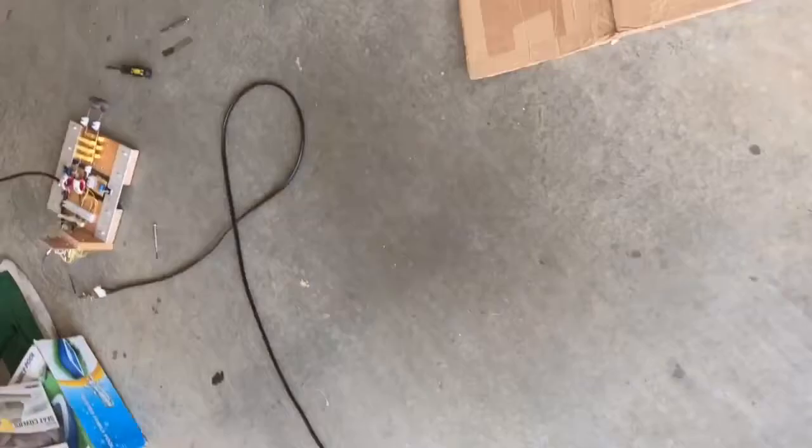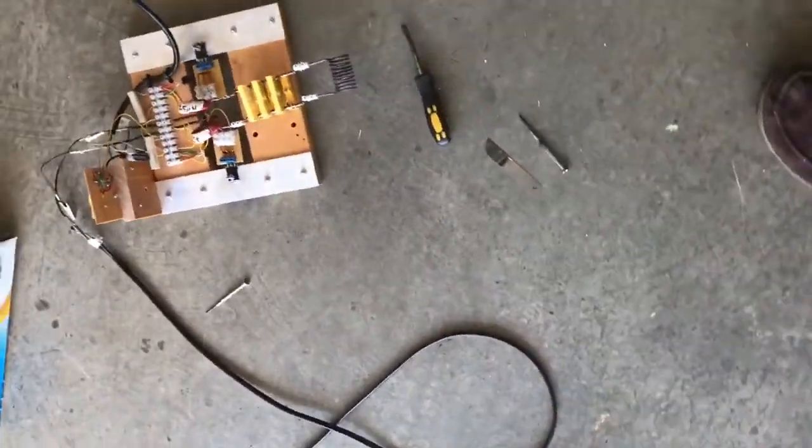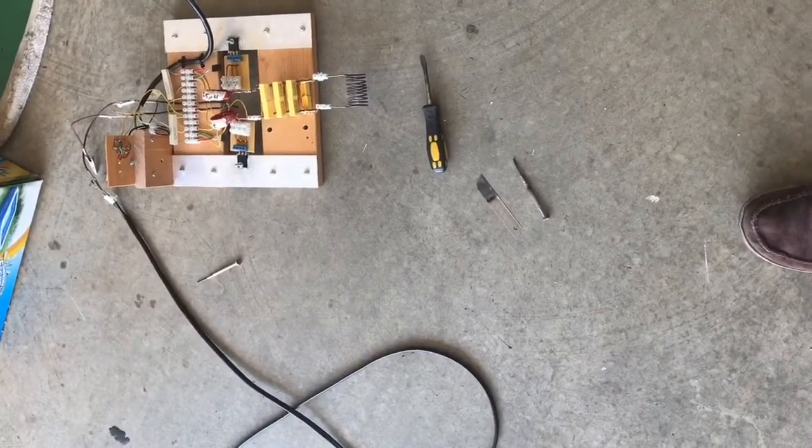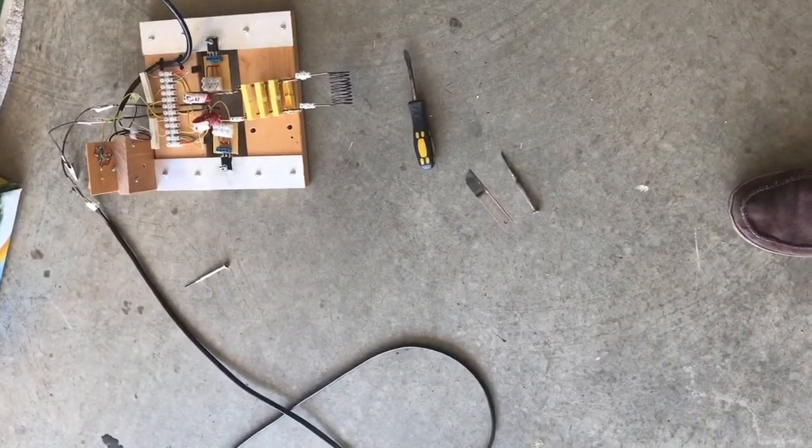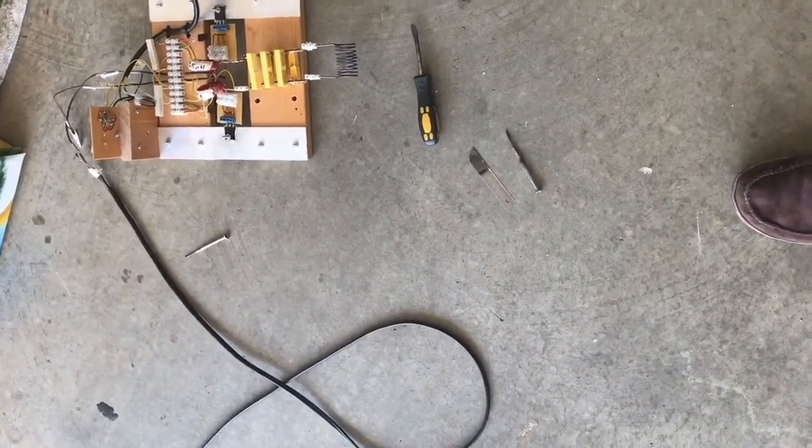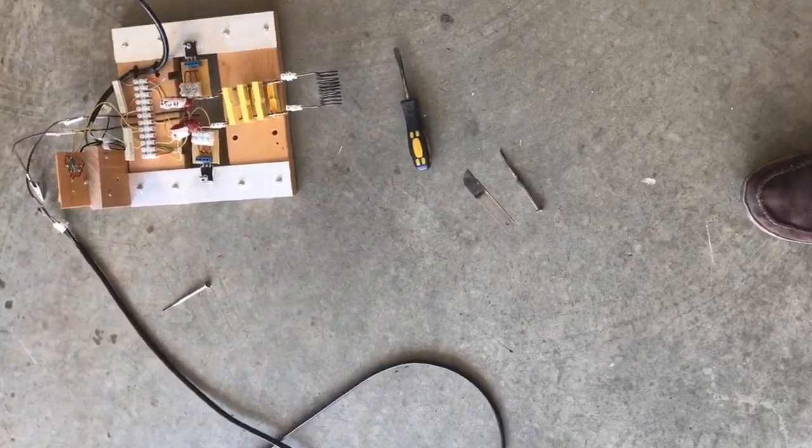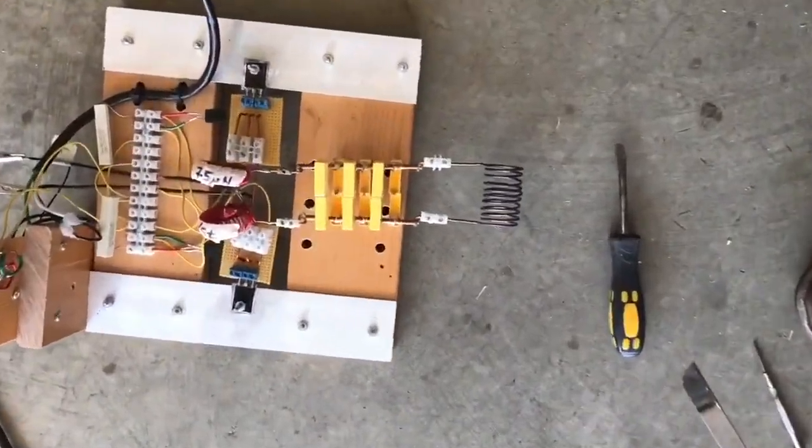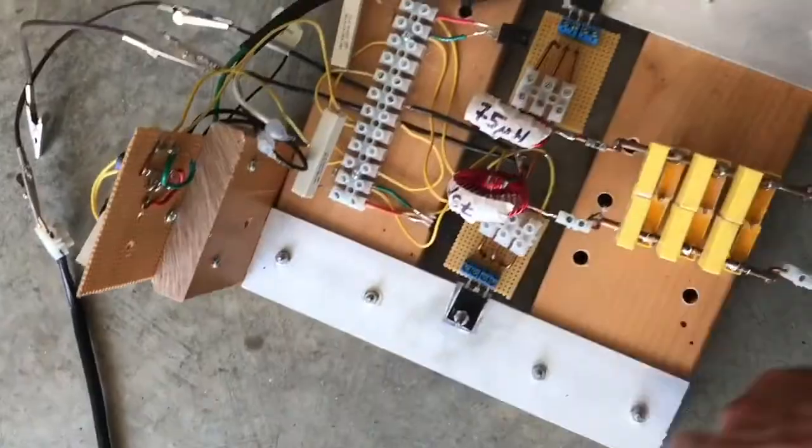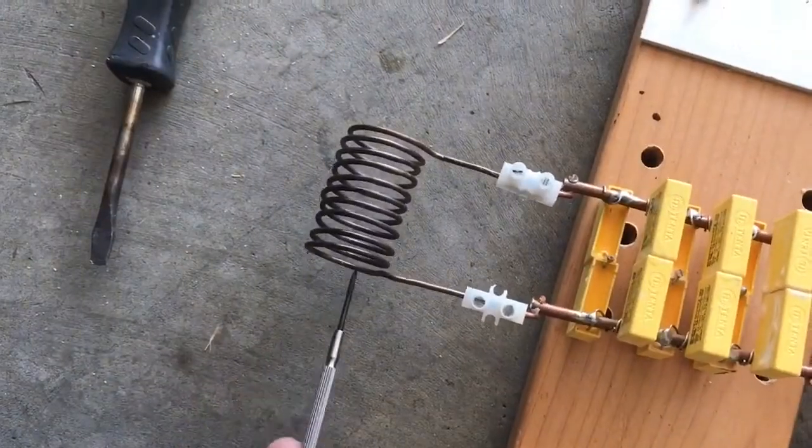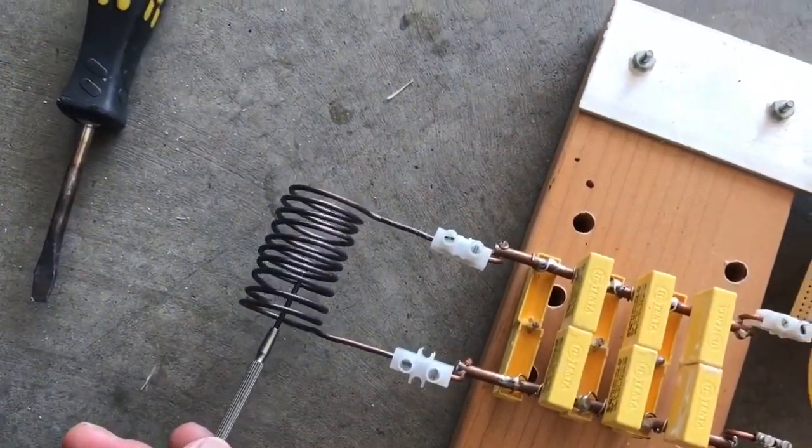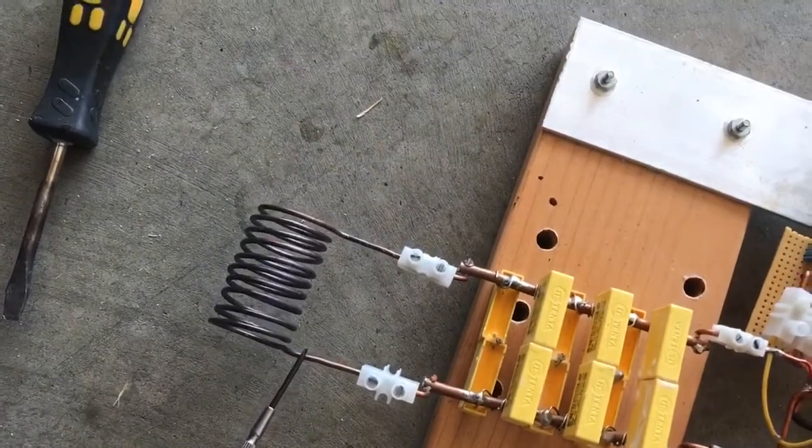I have this solar panel wired to an induction heater right here. We're going to see if we can heat up metal to glowing or above with this particular induction heater, which uses some IRFD260s and has a copper wire coil with about 10 turns. This is 12 gauge wire.